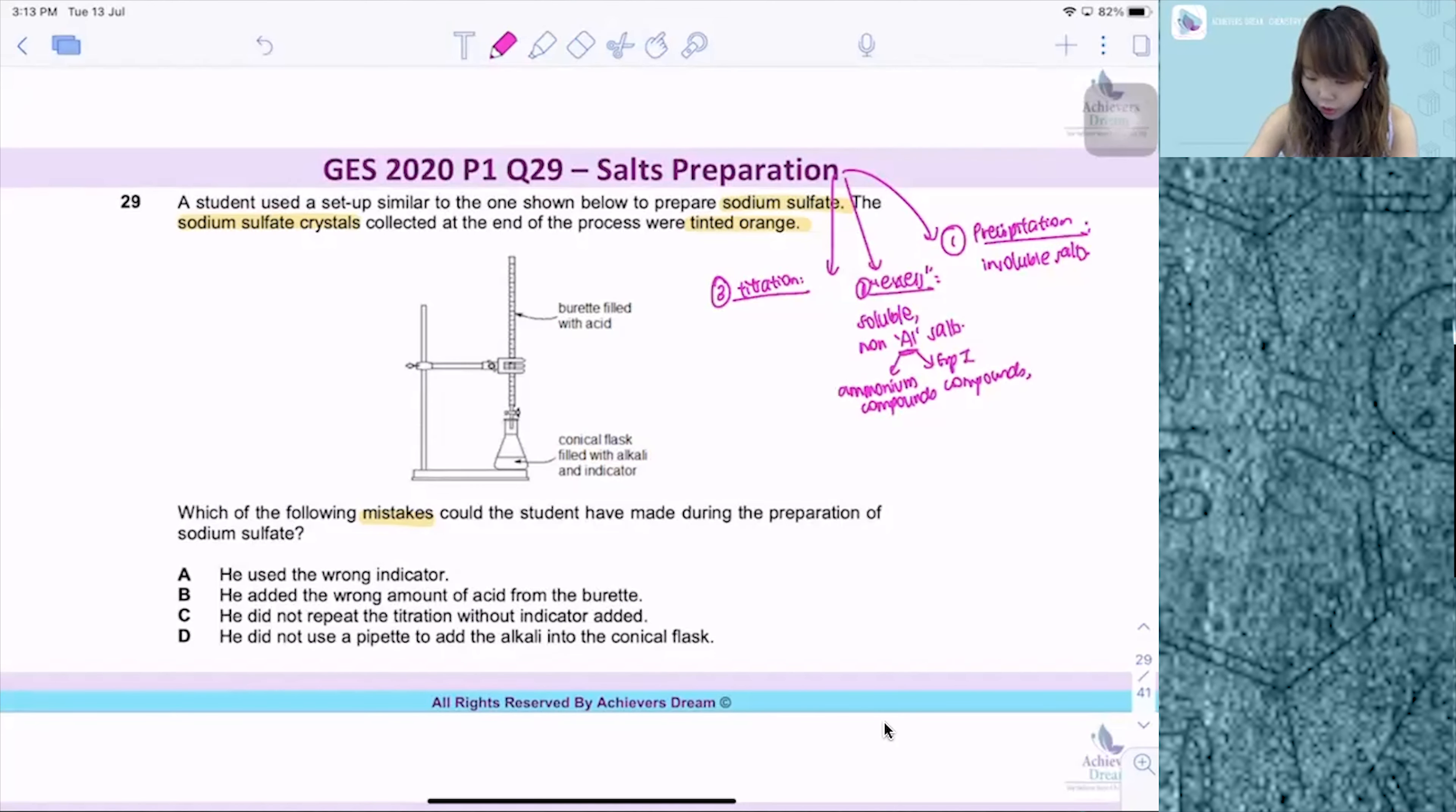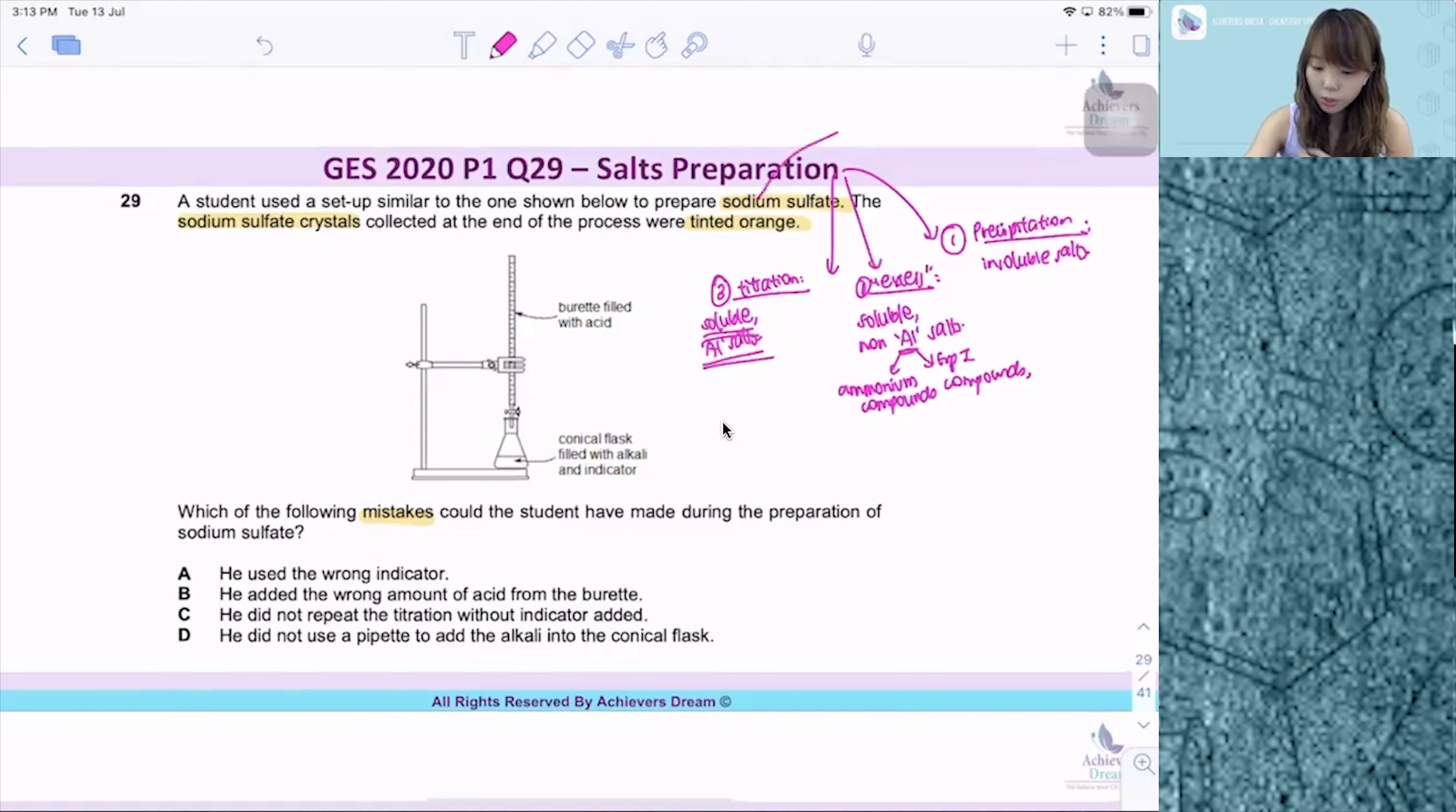Then for titration, it is used to produce soluble A1 salt. So any group 1 or any ammonium compound, we use titration method. So in this case, sodium sulphate Na2SO4, this is a group 1 compound because of sodium. So we are using the titration method, which is what you see in the diagram.